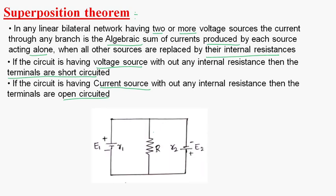Now I will explain the statement of the superposition theorem using this circuit. According to superposition theorem, when a network has two or more sources — here this network has two voltage sources — the current through the branch, let us say I1 dash, is the current flowing through this branch.